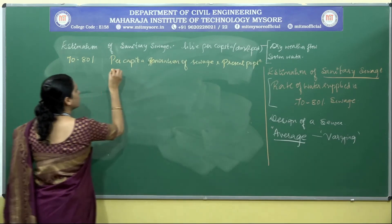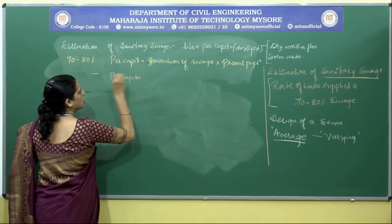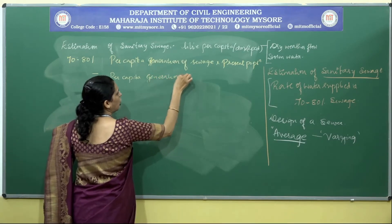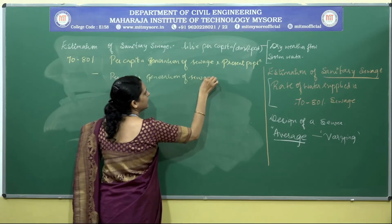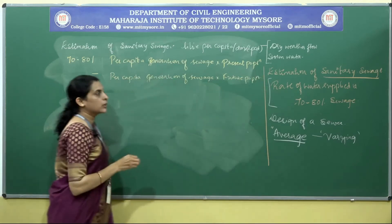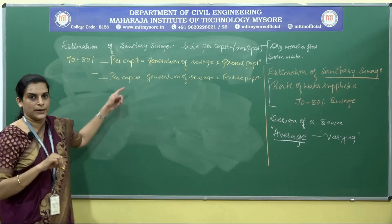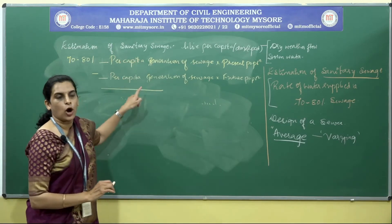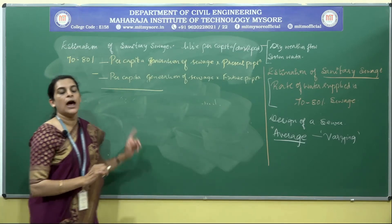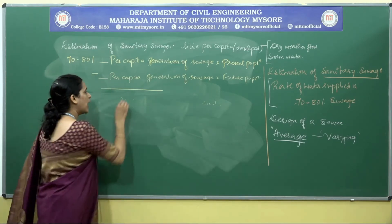Similarly, per capita generation of sewage multiplied by the future population gives the quantity at the end of the design period. These two calculations help us find the total quantity of sewage generated at the beginning and end of the design period, which helps us find the average flow.